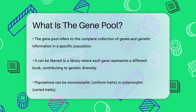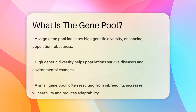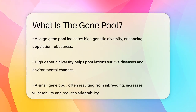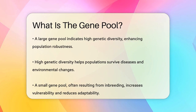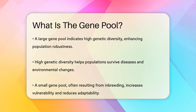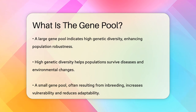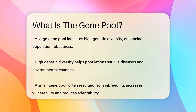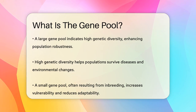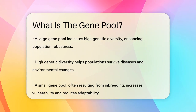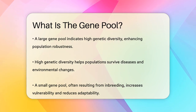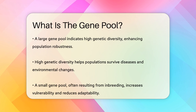Imagine a population of birds. If all the birds look exactly the same and have the same traits, they are said to be monomorphic. But if there are different types of birds with various traits, like different beak shapes or feather colors, then they are polymorphic. This diversity is what makes up the gene pool. A large gene pool means there is a lot of genetic diversity, which is good news for the population. It makes them more robust and better able to survive tough times, like diseases or harsh environmental changes.